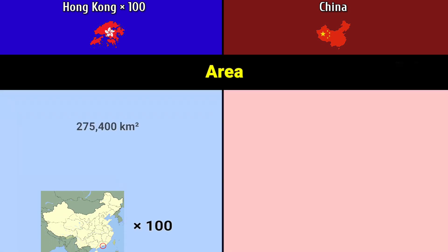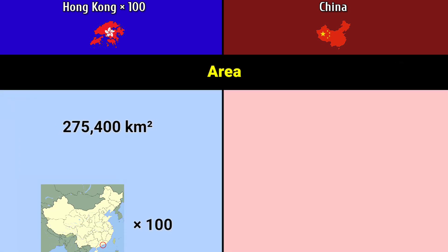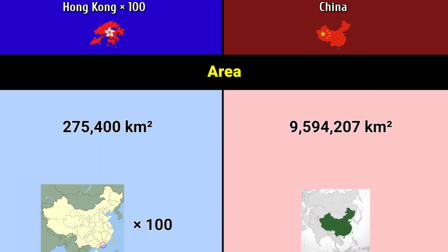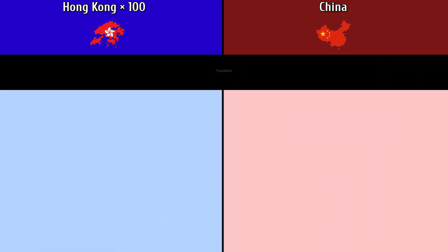Area: Hong Kong 275,400 square kilometers, China 9.59 million square kilometers.